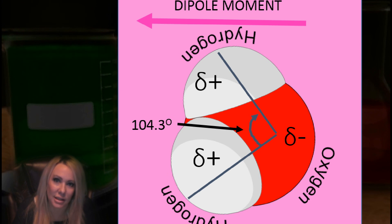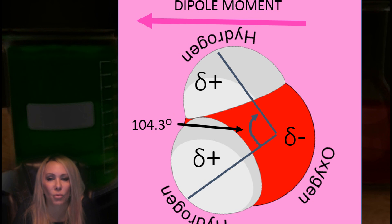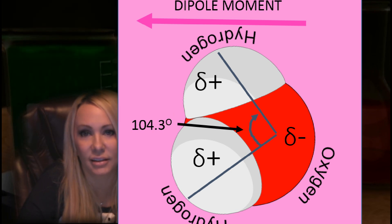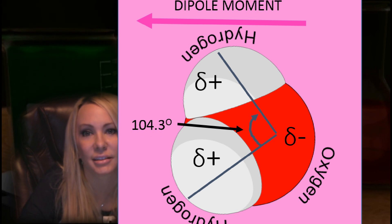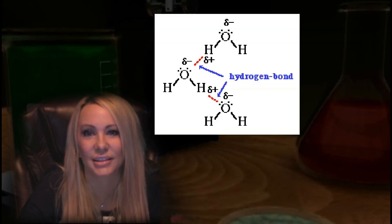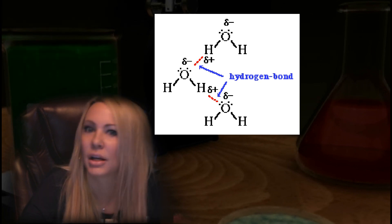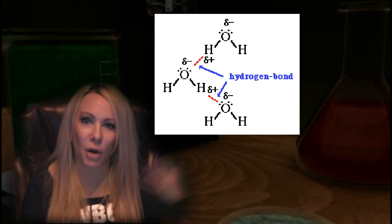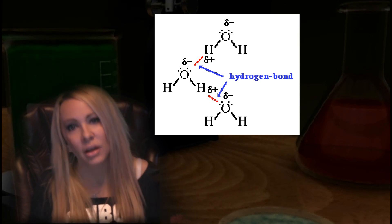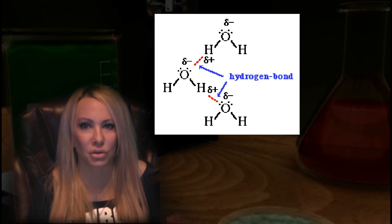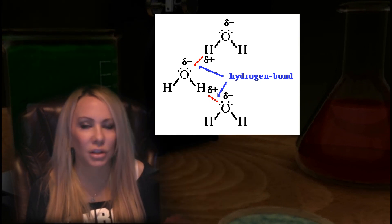We have a bend in both of the covalent bonds between oxygen and hydrogen at an angle of 104.3 degrees. Paula Abdul said it best back in the 90s — opposites attract. She was right; Paula Abdul was a budding biochemist and nobody even knew it. The partially positive hydrogens are going to be slightly attracted to the partially negative oxygen. This is how water molecules travel about with all their billions of friends in a beaker of solution.